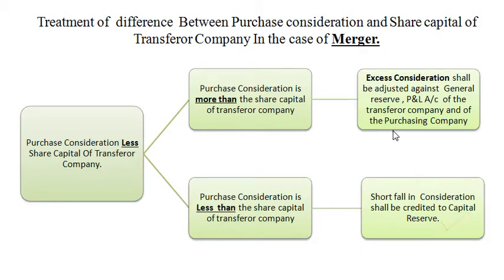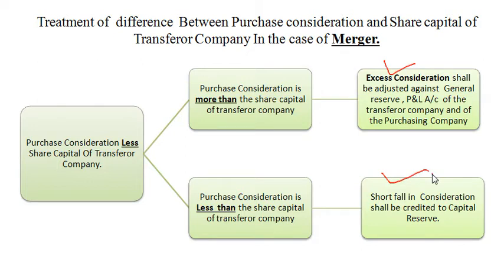Dear students, as we have seen in the accounting entries, capital loss due to merger was debited in accounting entry number 2, and capital reserve was credited in accounting entry number 2. Out of these two situations, only one result can be possible — either there will be a capital loss or there will be a capital profit. I hope you have understood the treatment of difference between purchase consideration and paid up share capital of the transferror company in case of merger. This is a very important treatment for calculation of problems related to merger.